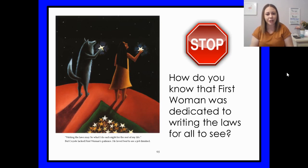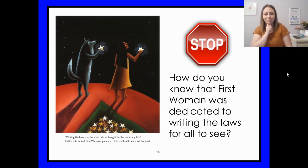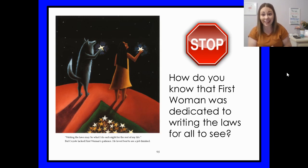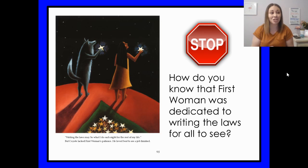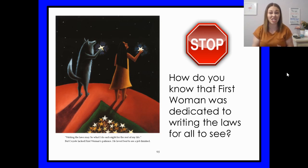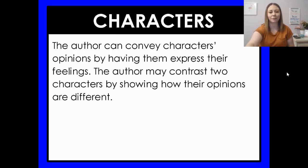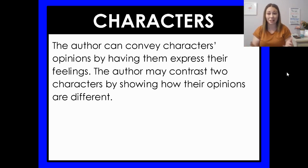Our stop and think question: how do you know that First Woman was dedicated to writing the laws for all to see? Well, what did she just say? In her dialogue, she says, 'Writing the laws may be what I do each night for the rest of my life.' We can tell she's dedicated because she's going to spend the rest of her life doing it — she doesn't feel the need to rush or be finished; she wants to do this job well. When we're thinking about characters, the author can convey characters' opinions by having them express their feelings. The author may contrast two characters by showing how their opinions are different — because contrast means to show how people or things are different.